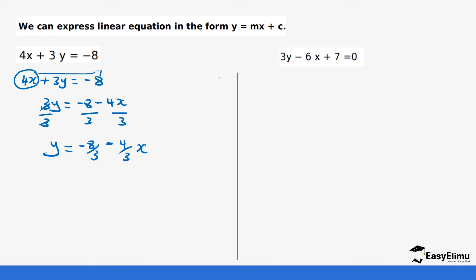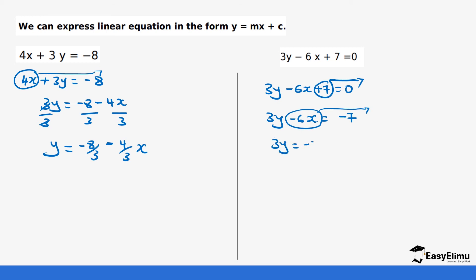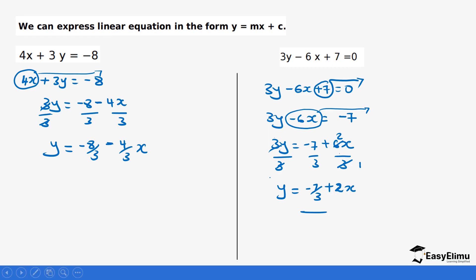Let's work out another question. We have this equation of a line and we want to make it linear. So we take the positive 7: 3y minus 6x equals minus 7. Then we take minus 6x to the other side as well, which gives us 3y equals minus 7 plus 6x. Once again, our y has a value in front of it, so we divide everywhere by 3. We end up with y equals minus 7 over 3 plus 2x, because 6 divided by 3 gives 2. So that is how it is written in the form of y equals mx plus c.